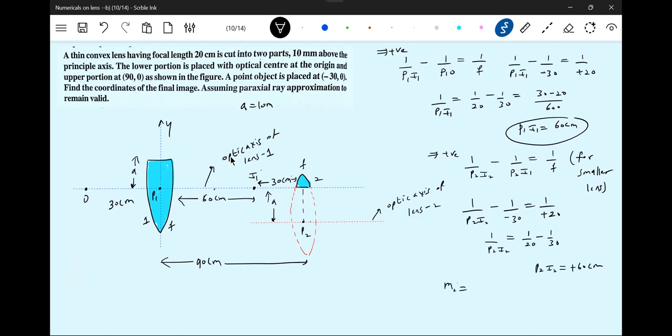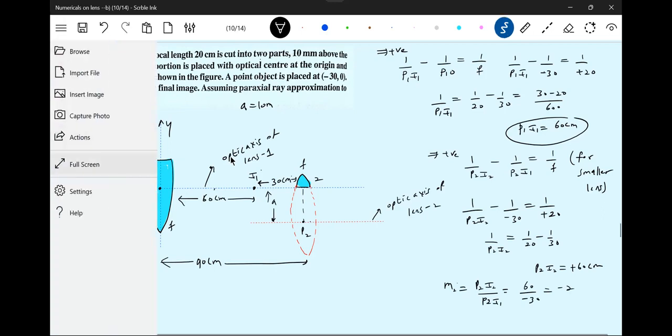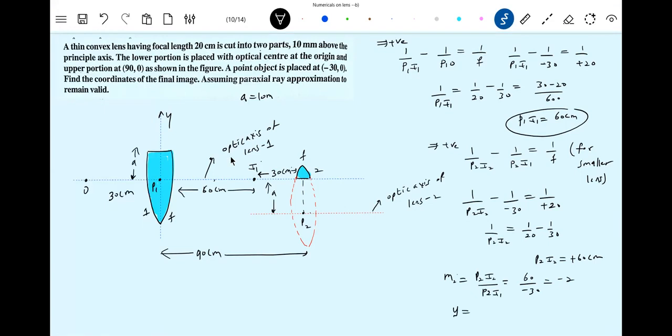Then magnification m2 equal to P2 I2 by P2 O1. P2 I2 will be 60, this will be minus 30, this will be minus 2. Then we'll calculate the height of the object. m2 equals I2 by O. What is the height of the object? This is the height of the object, 10 millimeters. 10 millimeters will be minus 20 millimeters, where the 20 millimeters will be below this one.